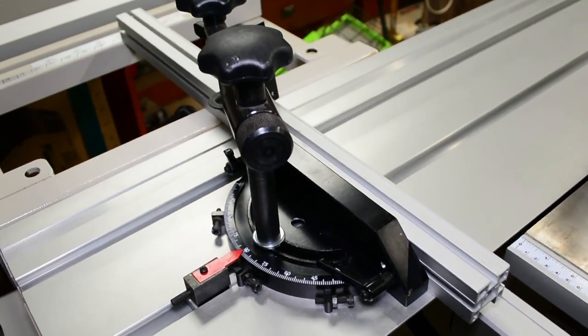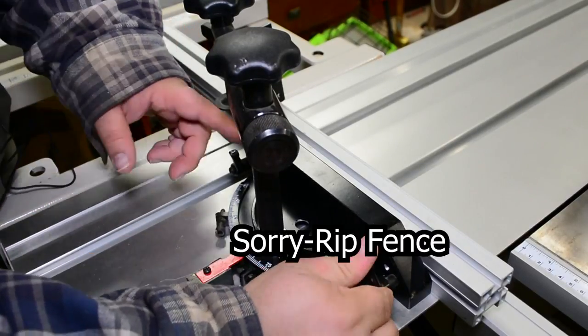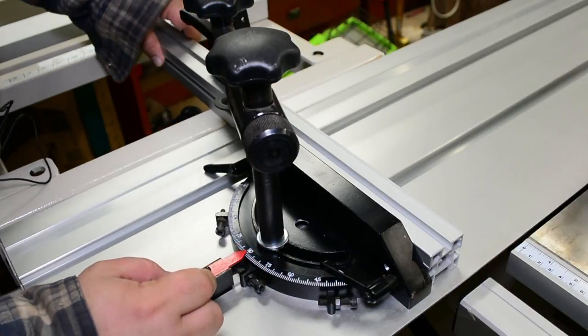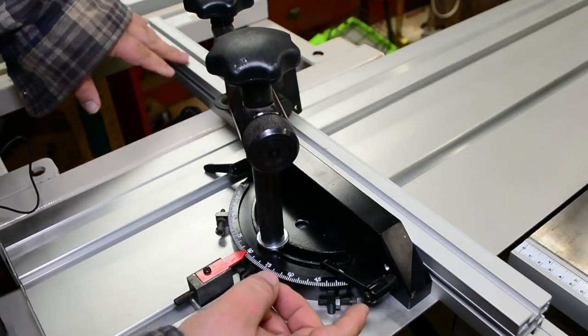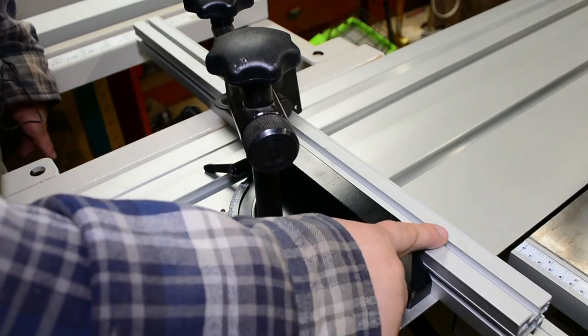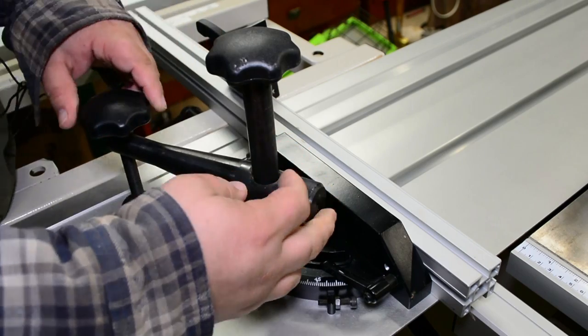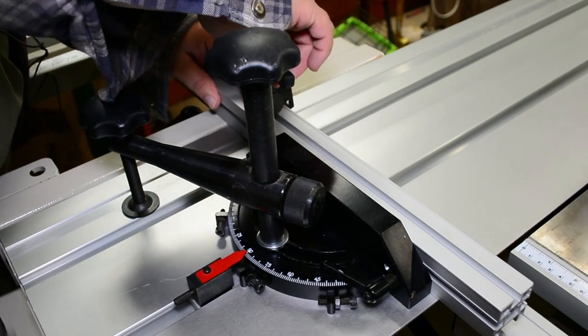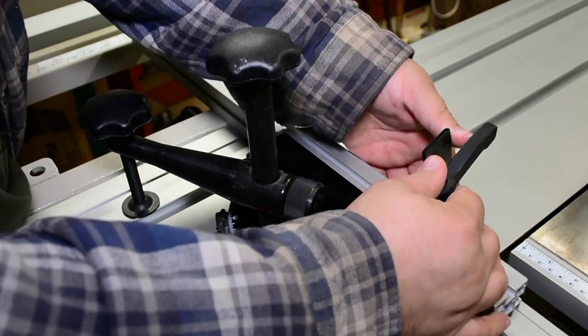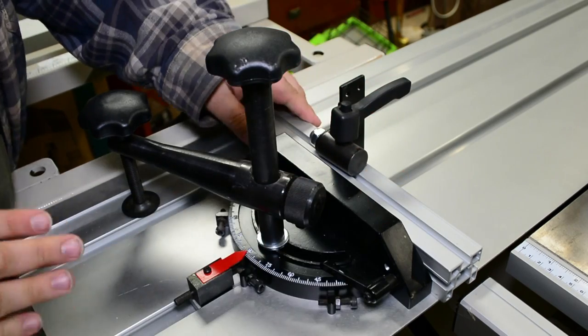Now, this thing does have a lot of the same features as the crosscut sled, where you have these two screws here that when you loosen them, you can slide the fence back and forth. The fence has a smaller sort of T-track on top, where you can put a holder in. It does come with this sort of stop right here. That's very handy, that you can fold up if you don't want to use it. You can fold it down once you want to do repeatable cuts. That's very handy.